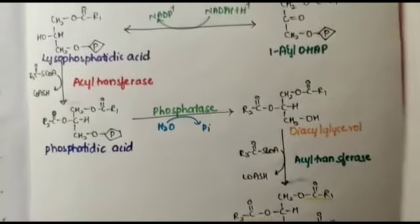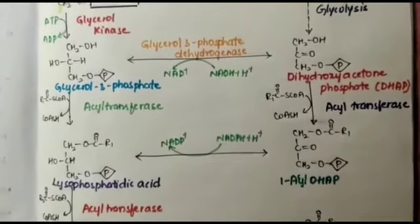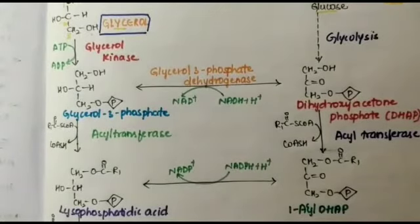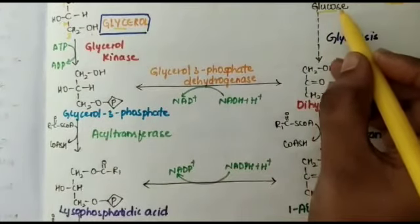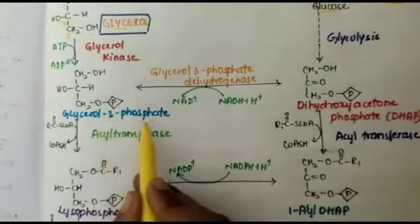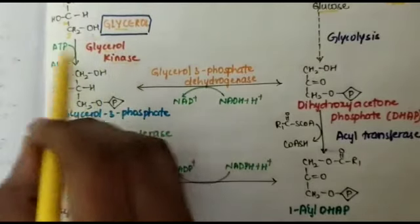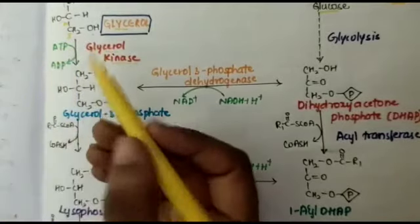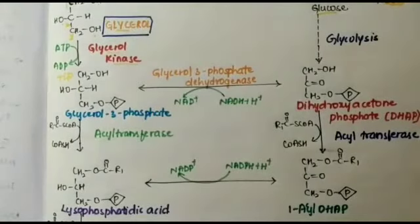If you see the structures, we can confirm that three acyl groups replace the OH groups — this is what the pathway is. First, glycerol is converted into glycerol-3-phosphate by the enzyme glycerol kinase, where ATP is utilized, giving ADP plus inorganic phosphate.